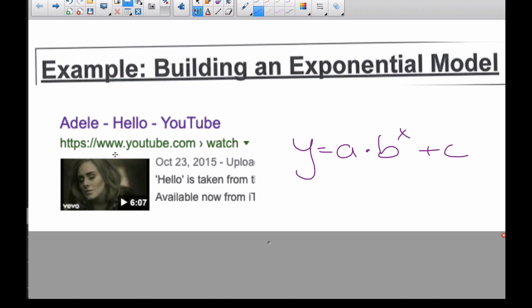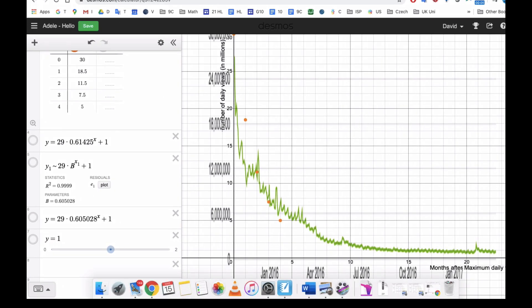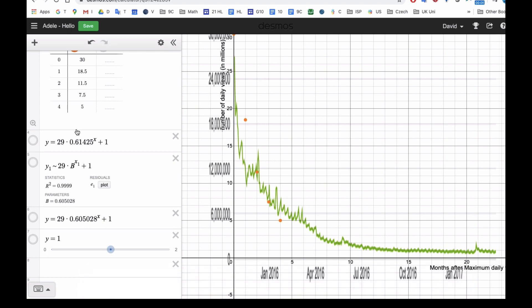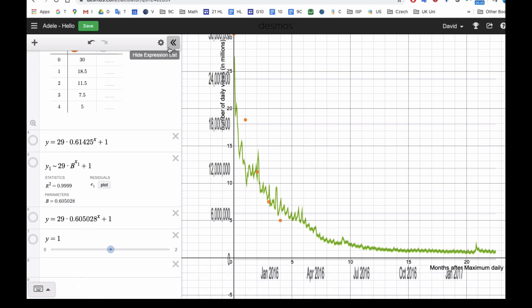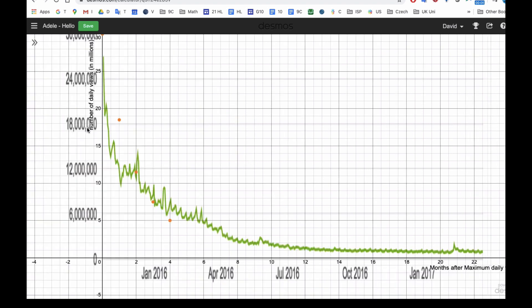So this is our scenario. Hello was released, it hit its maximum, and then things happen. So here is the graph of the YouTube hits. And if we look carefully here, this is the number of daily views in the millions.